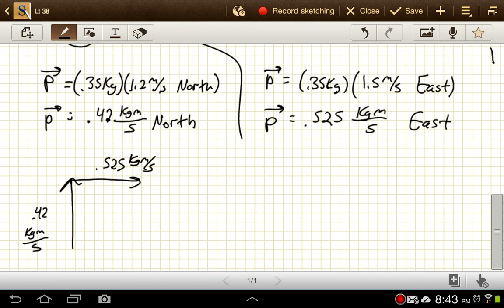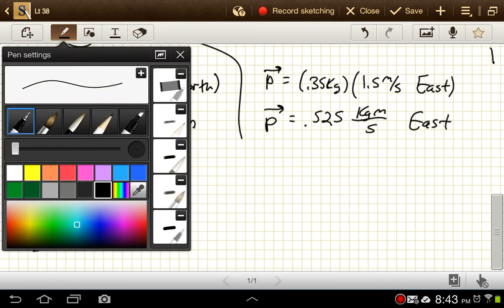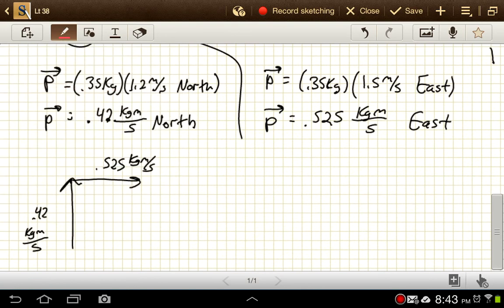And then my resultant, let's get a colorful resultant. That's a special vector. And this will be my overall momentum, or net momentum.